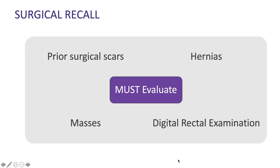Key physical exam points when approaching a patient with bowel obstruction: look for surgical scars as a sign of previous surgery. Evaluate for hernias. Perform a digital rectal examination to rule out rectal cancer and check for stool in the rectum that could contribute to distal obstruction. Identify and look for masses, as the presence of a mass might suggest a malignant or more serious cause of bowel obstruction.